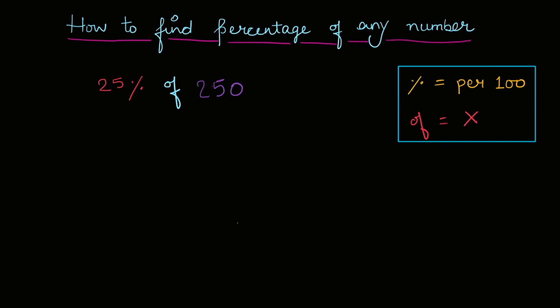So one percent of two hundred fifty. One percent of two hundred fifty is nothing but two hundred fifty divide by hundred. So two hundred fifty divide by hundred.